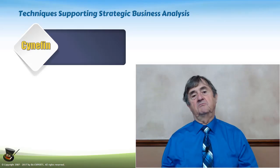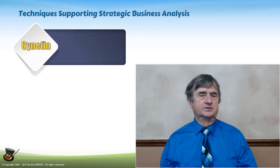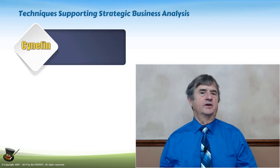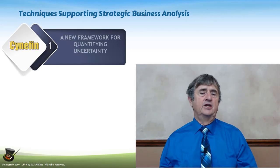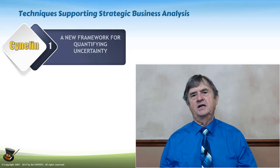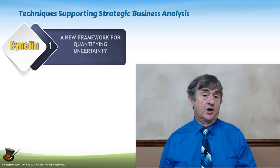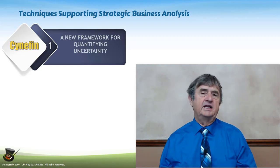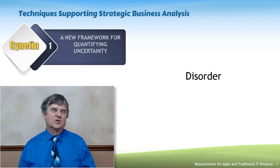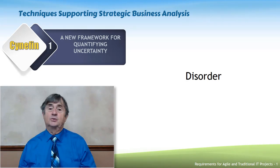Some techniques commonly used in strategic business analysis include KNEFIN, a framework for quantifying uncertainty. It assumes that anytime you're analyzing a situation — a requirement, user story, epic, or project — everything at the beginning is in a state of what we call disorder. Disorder means it has not yet been analyzed, so we're not sure what domain it belongs in.